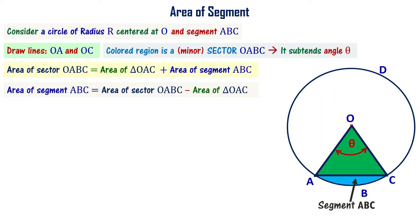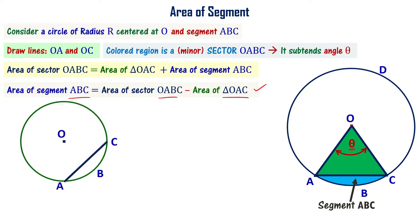So: area of segment ABC = area of sector OABC minus area of triangle OAC. The angle theta subtended is less than 90 degrees in this case. By subtracting the triangle portion from the sector, we get the area of the segment.